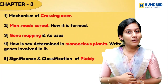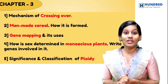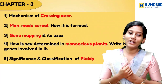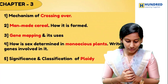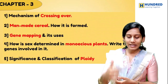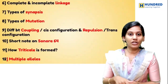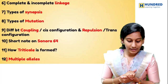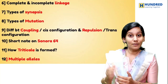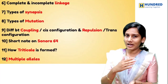Chapter 3 is going to be the Chromosomal Basis of Inheritance. The first question covers the mechanism of crossing over and how it is formed. Gene mapping and its uses. How is sex determination in monoecious plants? What are the genes involved in the process? Significance of ploidy and its classification. Complete and incomplete linkage, types of synapses, mutation and coupling, and repulsion — those are the differences.